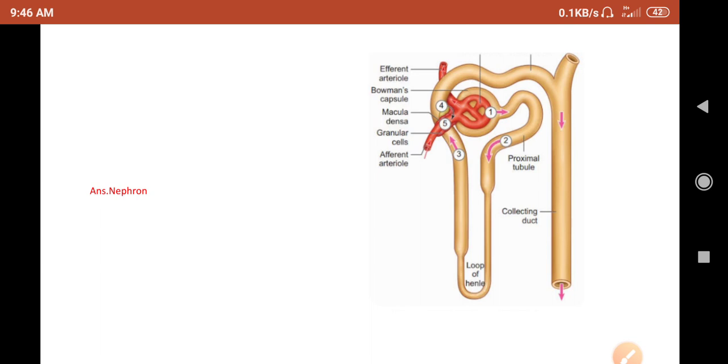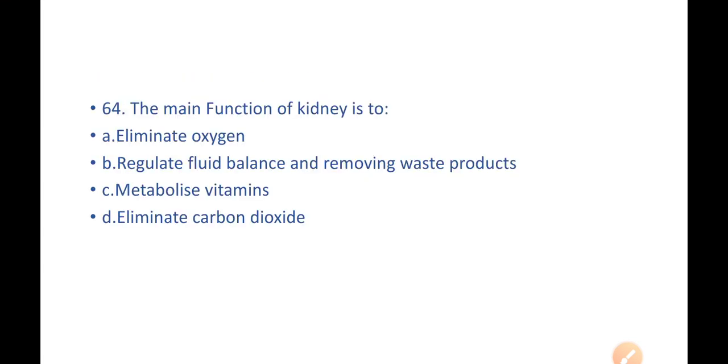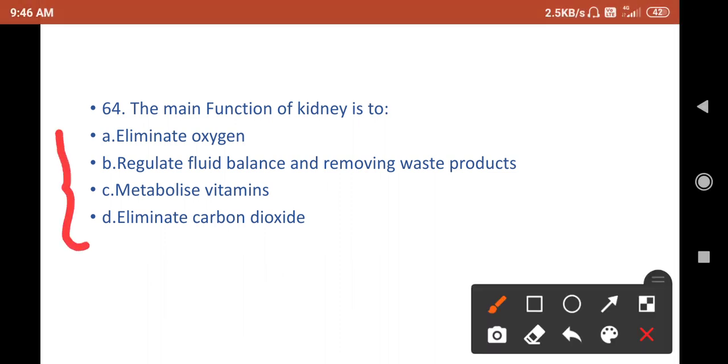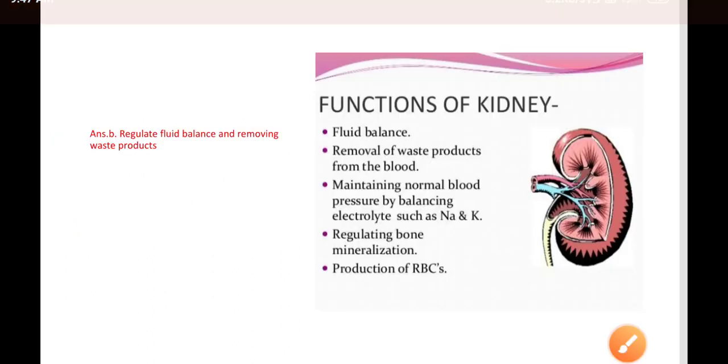Next: The main function of a kidney is: A) Eliminate oxygen, B) Regulate fluid balance and removing waste products, C) Metabolize vitamins, D) Eliminate carbon dioxide. If we see these four options, the kidney performs all these four functions, but observe the question carefully—they are asking the main function of the kidney. The answer is B: regulating fluid balance and removing waste products.